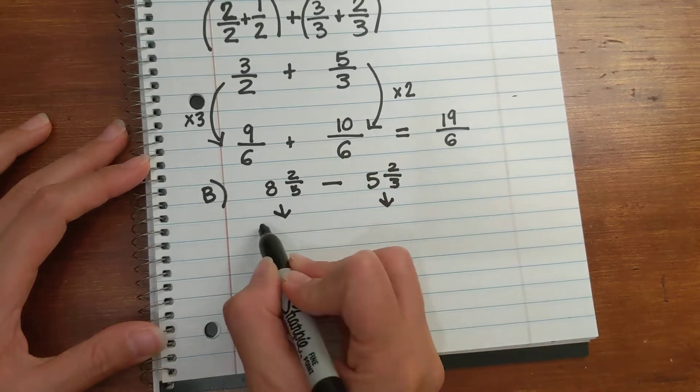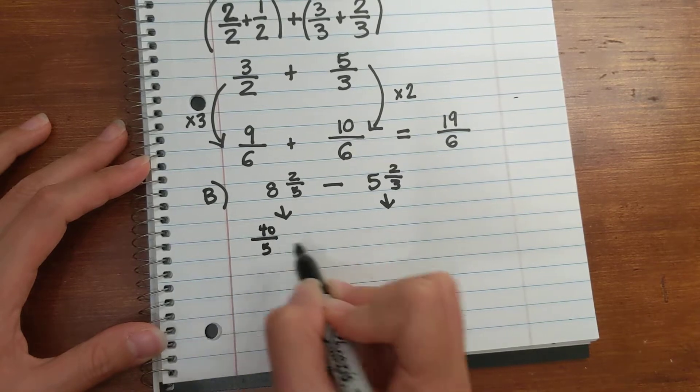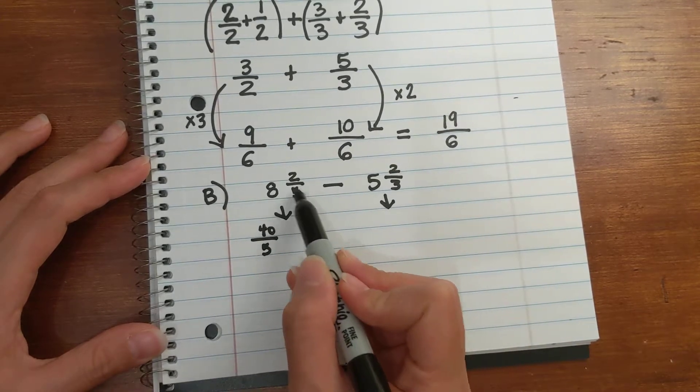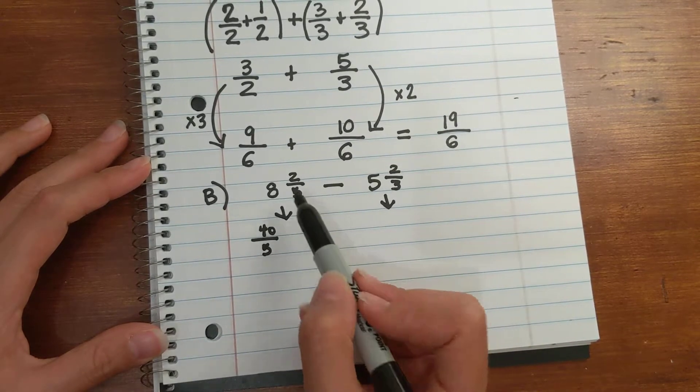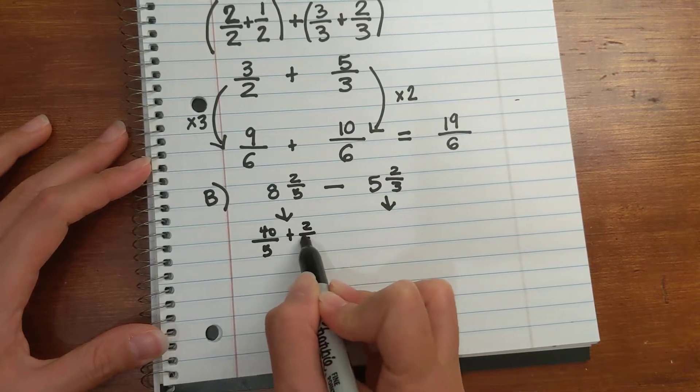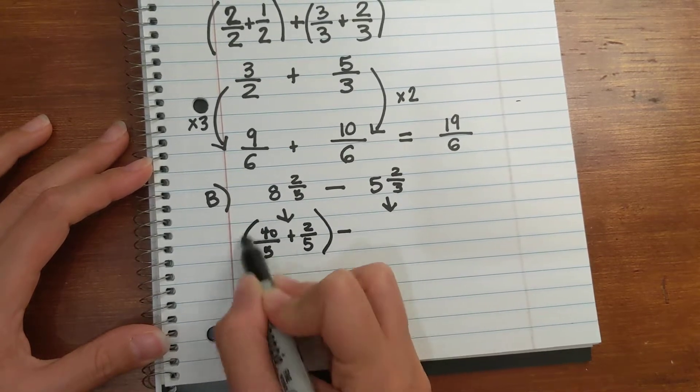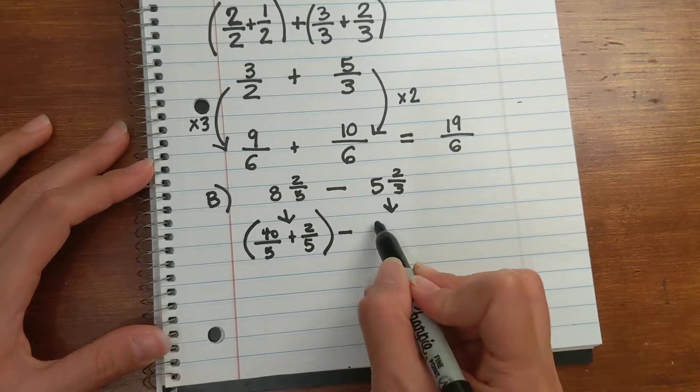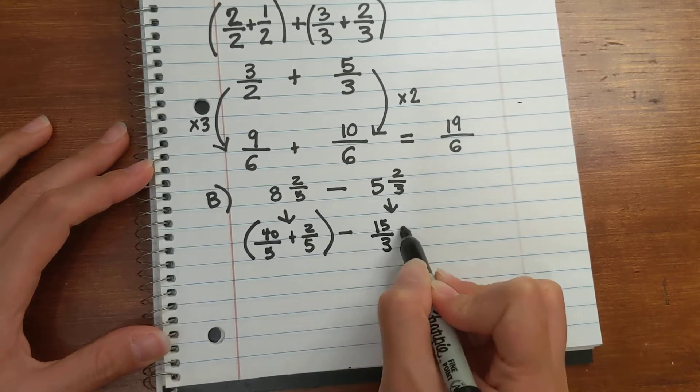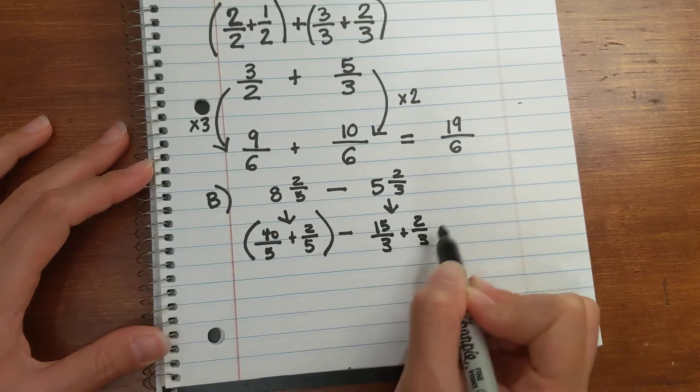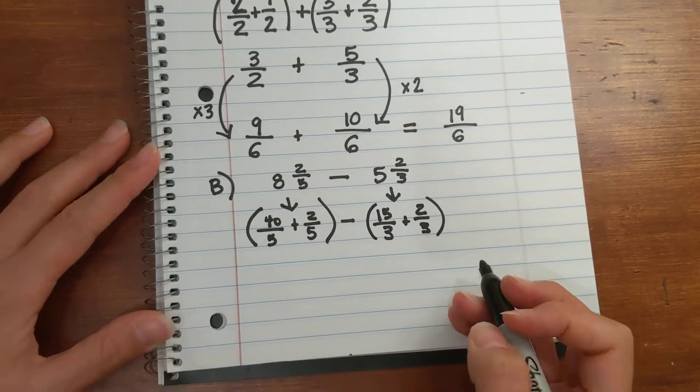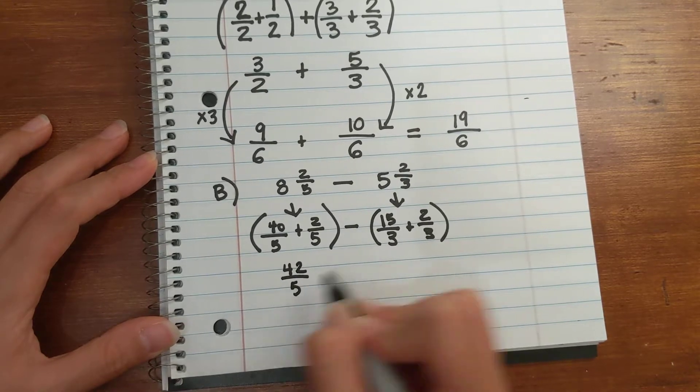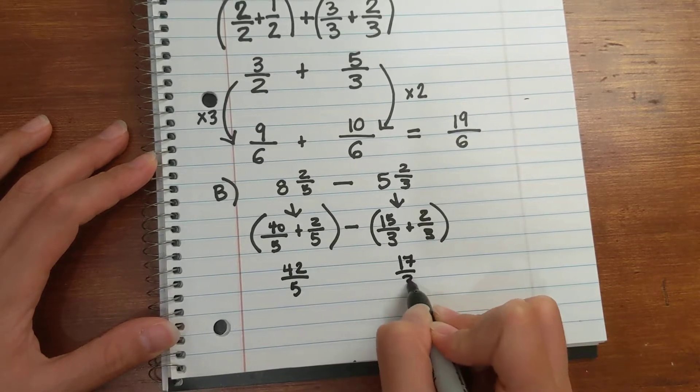So 5 times 8 is 40, 40 fifths. 8 wholes to the denominator of 5 is just the same thing as saying I have 40 fifths. So 40 fifths plus 2 fifths. Minus thirds, right - 5 wholes divided into thirds is 15 thirds plus 2 thirds. Add 42 fifths, and I have 17 thirds.